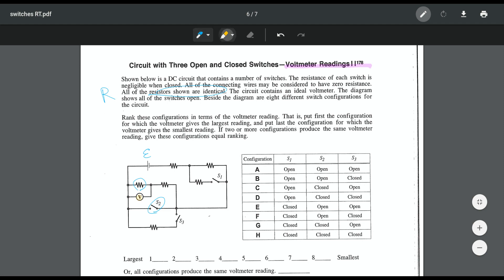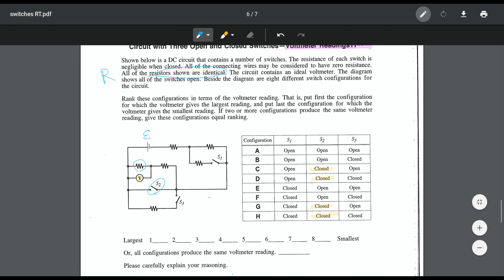So my voltmeter is going to measure zero every time switch 2 is closed. So I can go through and find those cases where switch 2 is closed, and right away I can know that those cases are going to be zero. So my voltmeter reading for those cases is going to be zero, and I'm done with half the cases.